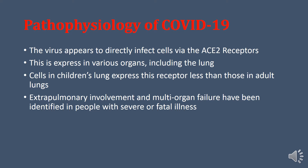Because ACE2 is present in lower numbers in children's lungs, the virus often does not break down in the lungs and instead infects the heart, arteries, and other organs. This is actually a drawback in children — it can affect vital organs like the heart more than in older adults. Cells in children's lungs express this receptor less than those in adult lungs, so extra-pulmonary involvement and multi-organ failure have been identified in people with severe or fatal illness.